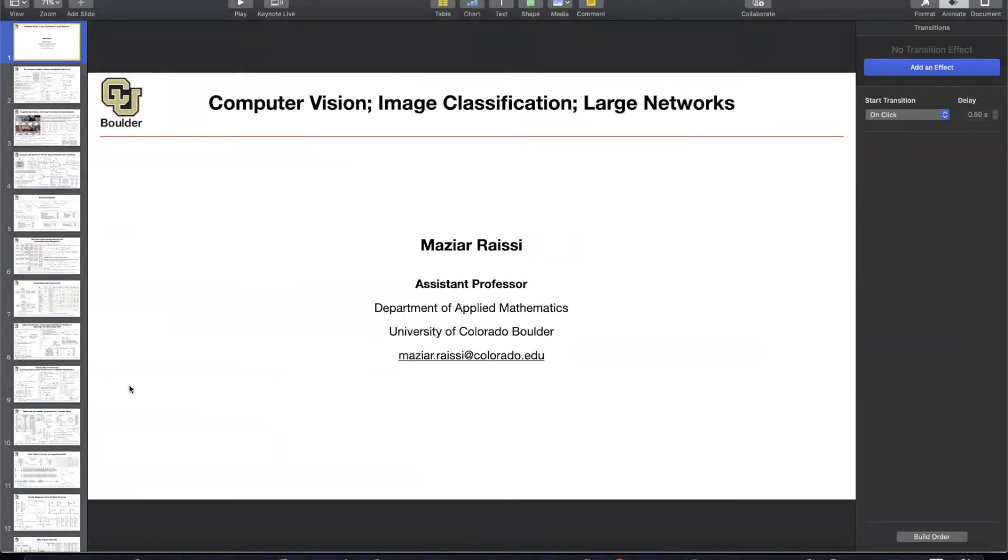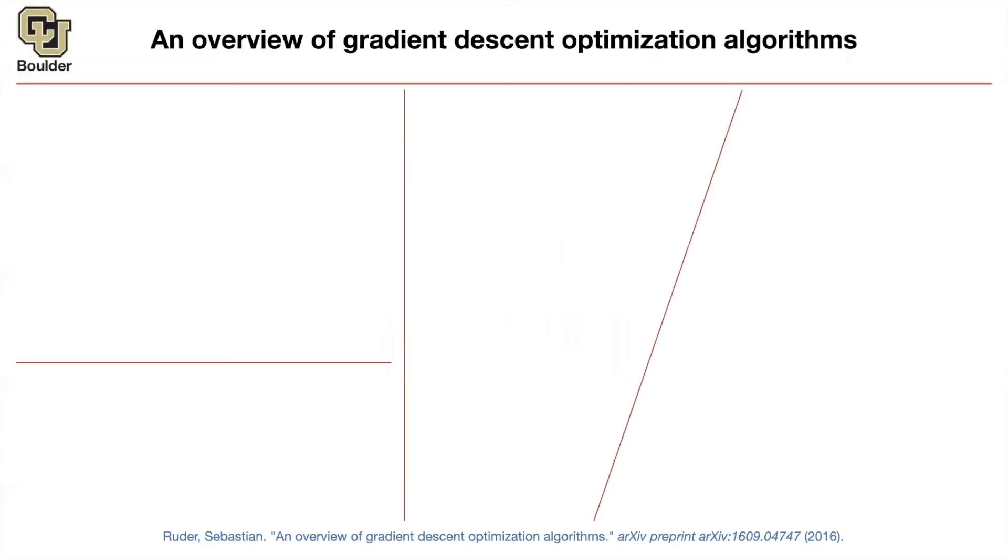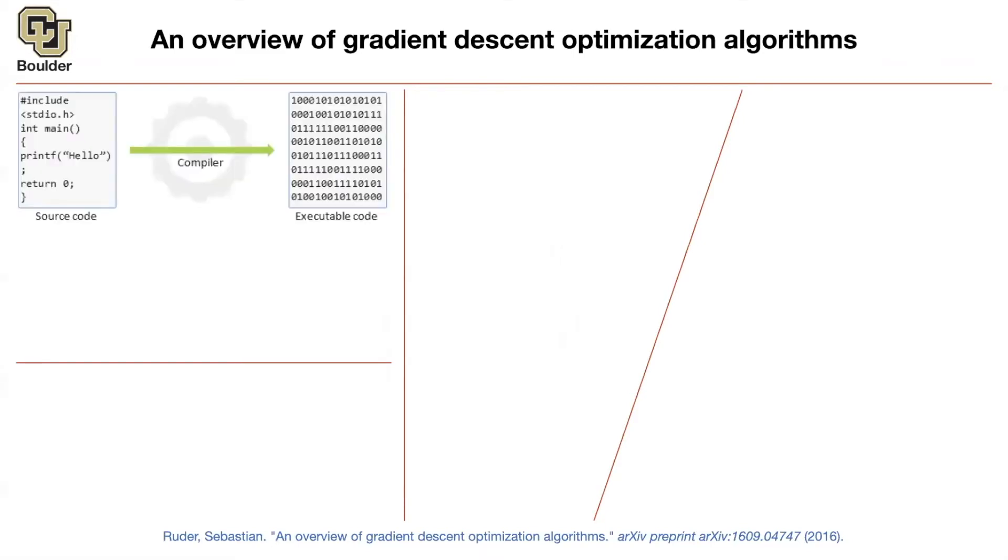So let's start with large networks, but before we do that, an overview of deep learning and especially gradient descent algorithms. I'm gonna start with that.